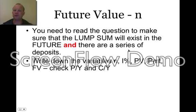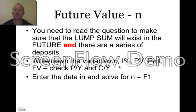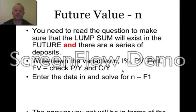When you've got that, write down the variables: N, I, PV, payment, FV — checking payments per year and compounding periods per year. Enter the data into your calculator and solve for N, which is F1.